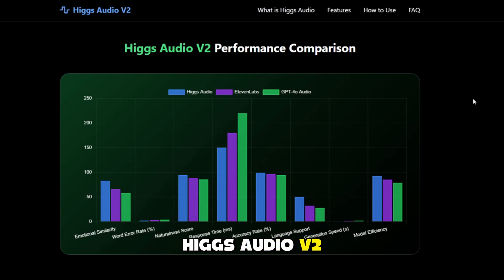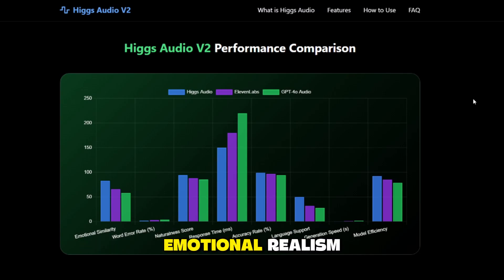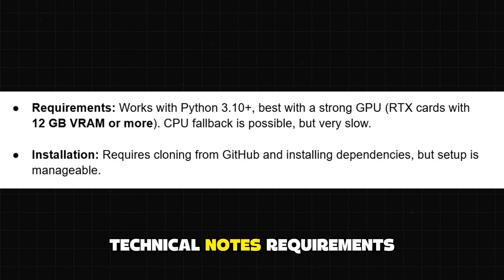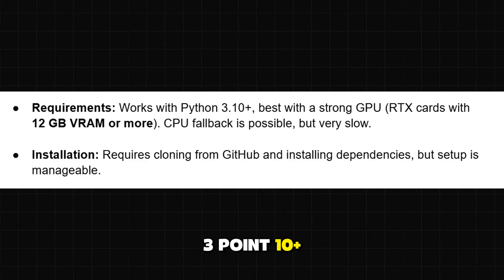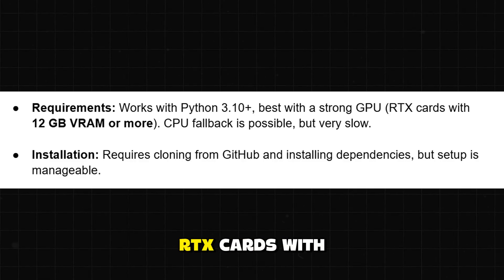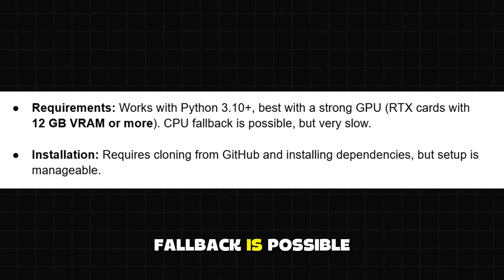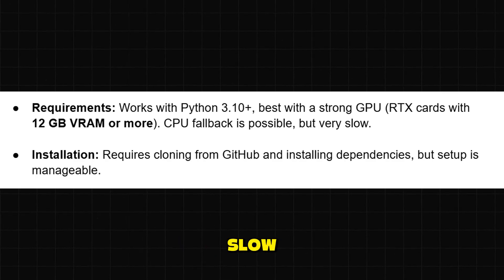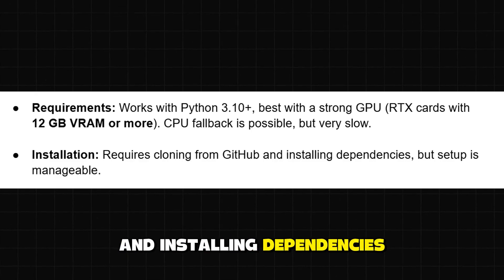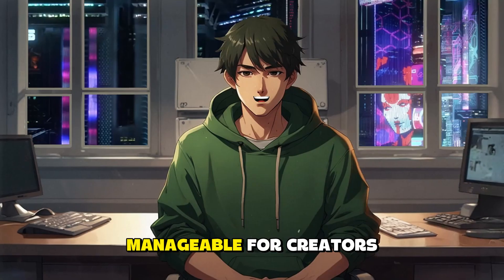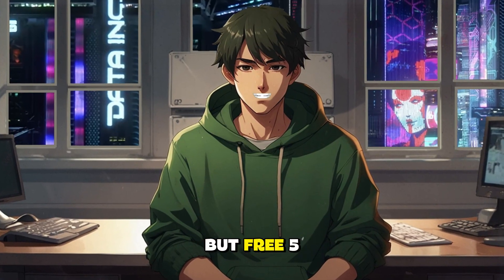Benchmarks showed Higgs Audio V2 outperforming smaller commercial models in terms of emotional realism. It works with Python 3.10+, best with a strong GPU — RTX cards with 12GB of VRAM or more. CPU fallback is possible but very slow. Installation requires cloning from GitHub and installing dependencies, but setup is manageable. For creators, it's like having an entire voice acting studio, but free.